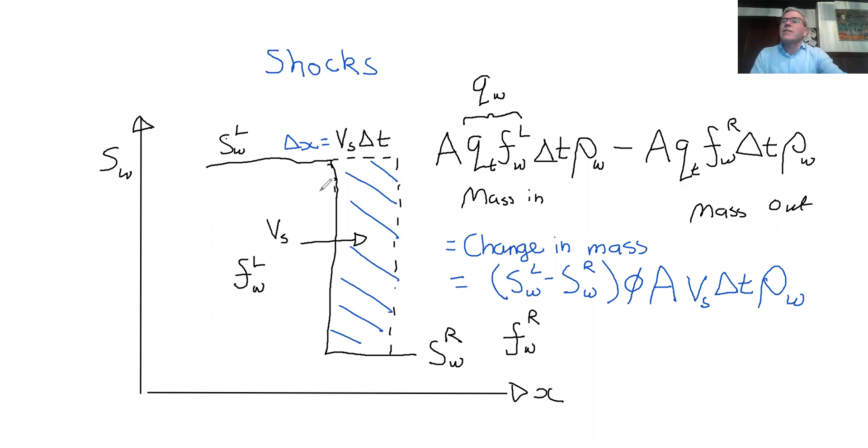That's the right side of the shock. So we can look at a few things here. The areas, of course, are going to cancel. So are the densities, if we assume that we have.